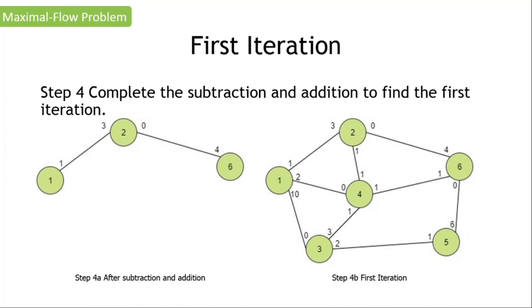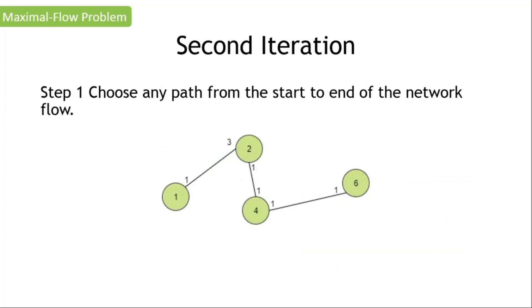After completing the subtraction and addition process, we find the first iteration as shown on the right side of our screen. The next question is: can we find another path that has no zero flow capacity going from a source node to a sink node? And the answer is yes. In this next step, we will be using the path one to two, two to four, and four to six. That is our step one for our second iteration.